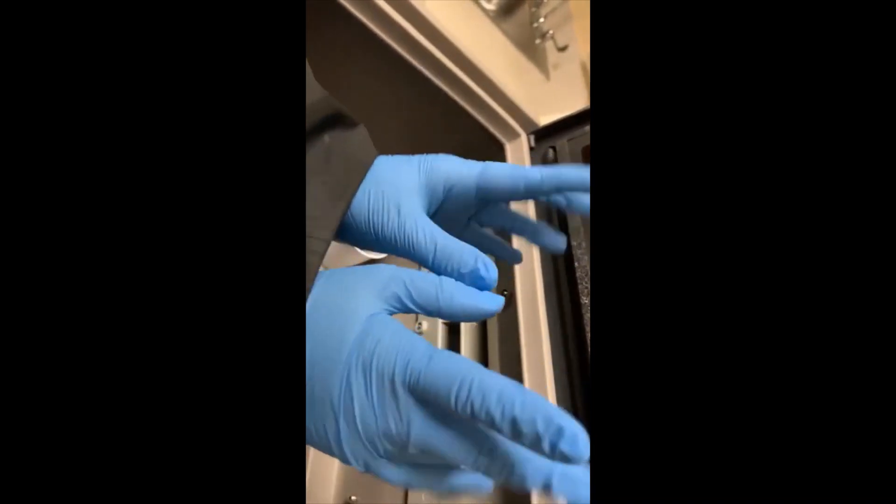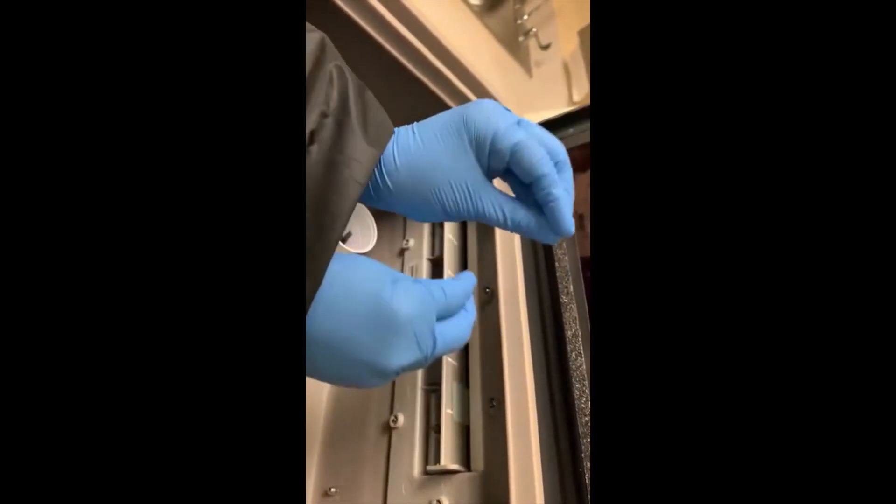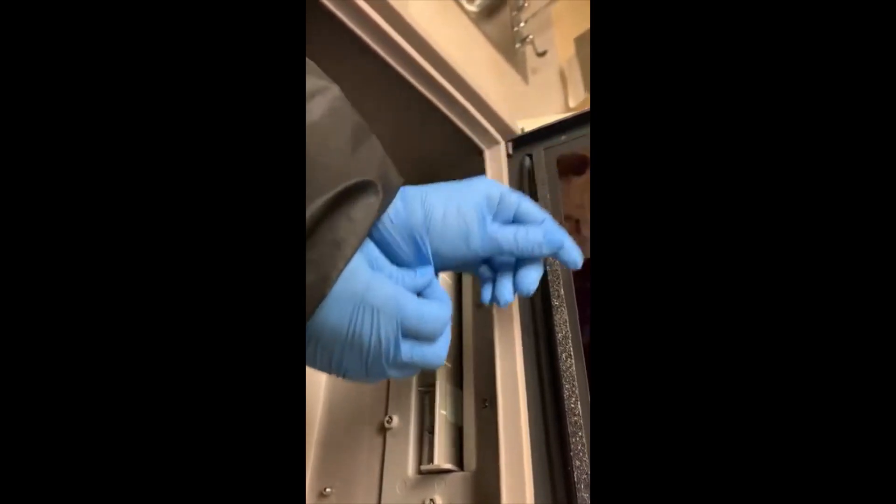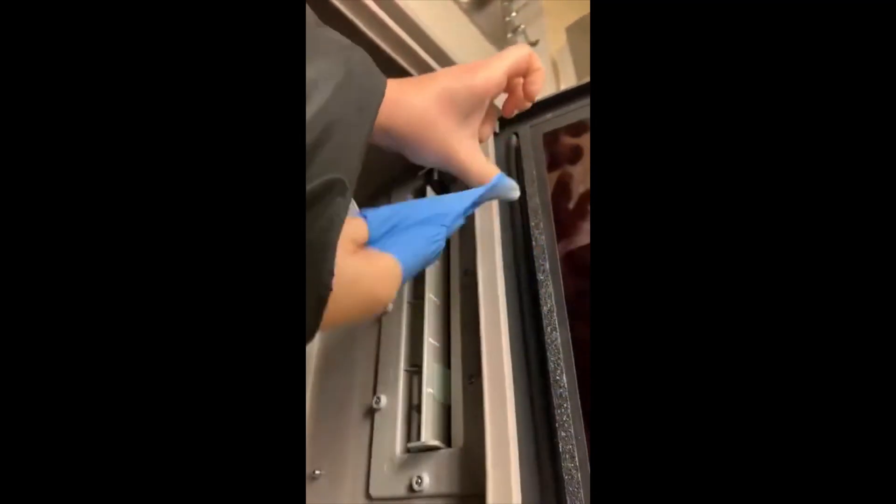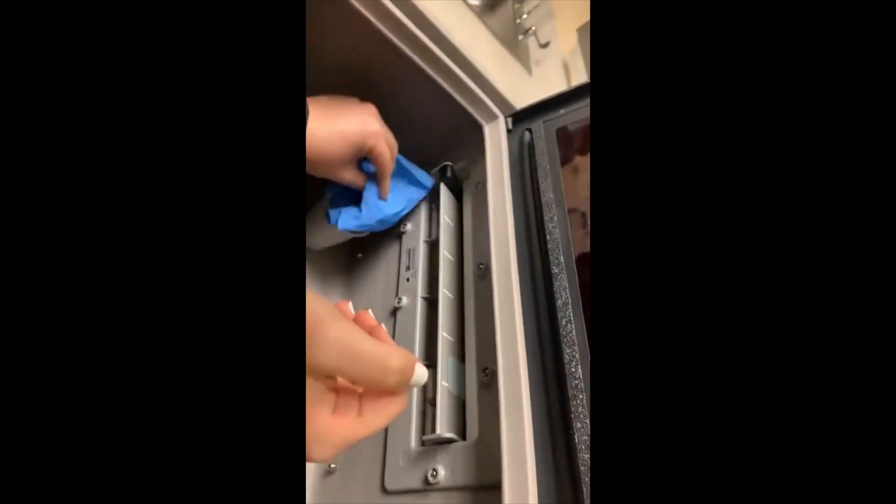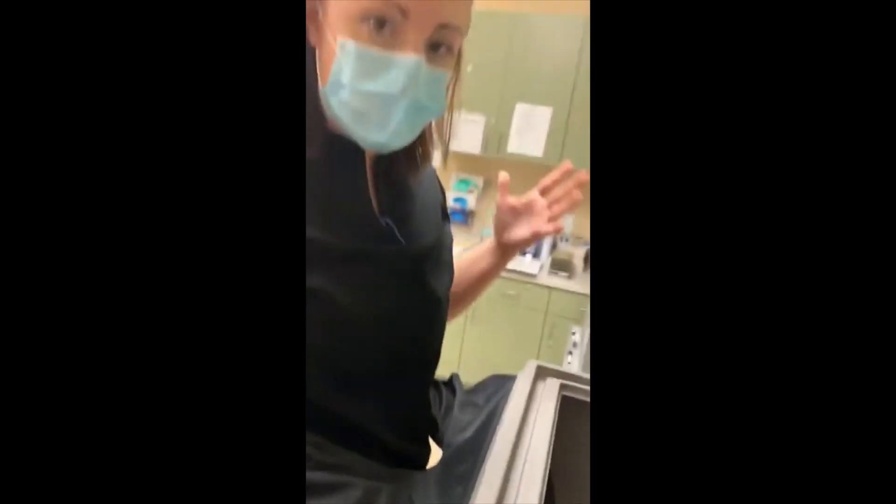Because your gloves would be technically considered contaminated at this point since you were touching film, you're going to take your gloves off inside the daylight loader. You're going to take those gloves, stick them in your cup, and then pull your hands out the sleeves. Then you're done.